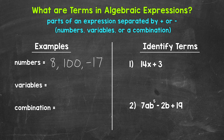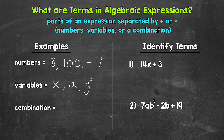Next, we have variables. Some examples would be x, a, and g cubed. Terms can involve exponents, so something to keep in mind. The value of variables can vary — the value can change. For example, x can equal 5, 30, or whatever the case may be in the given algebraic expression.